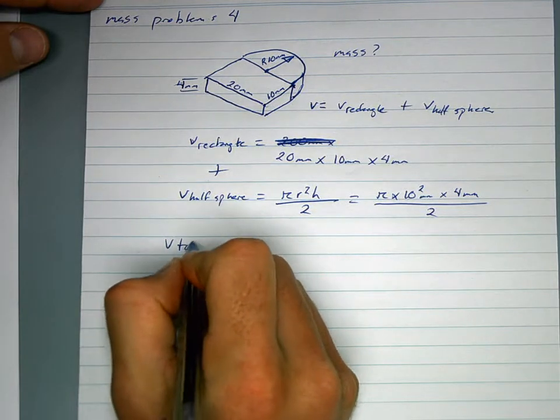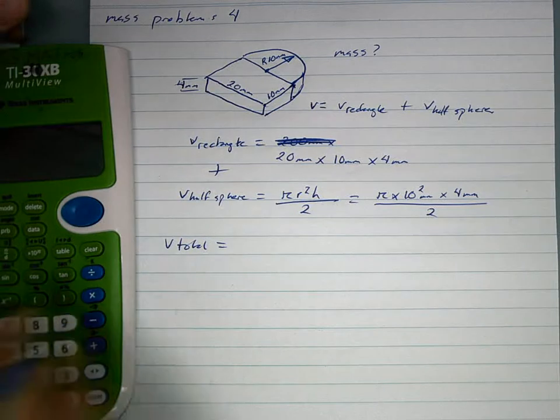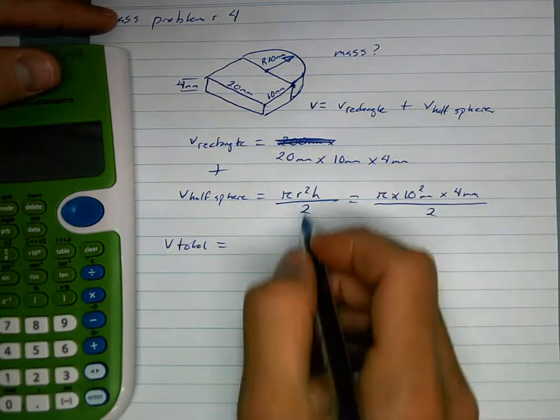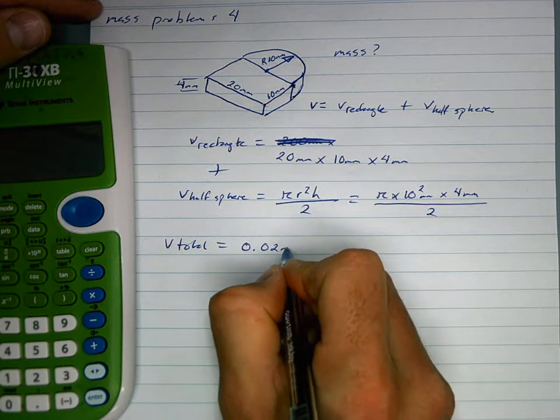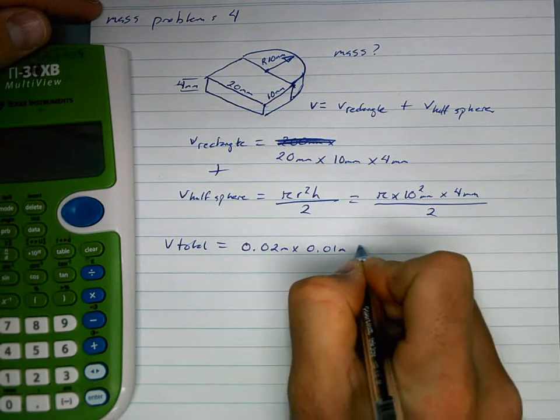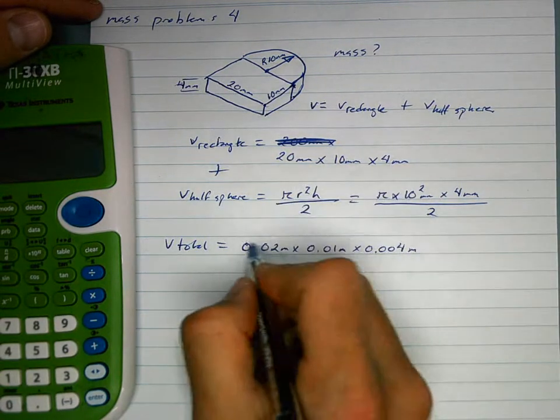So our V total is equal to, let's plug this in. And let's convert to meters, so 0.02 meters times 0.01 meters times 0.004 meters, that's the rectangle.